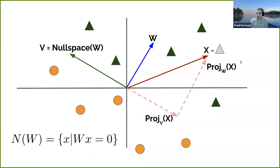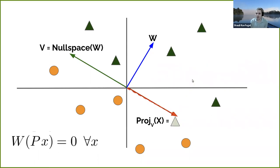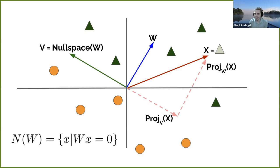In two dimensions this seems like a drastic operation since we removed one of two components, but in a high-dimensional space — for example with BERT representations that have hundreds of dimensions — we only remove a single dimension. This is a very limited intervention which only removes the information relevant for distinguishing between the two values of the protected attribute.